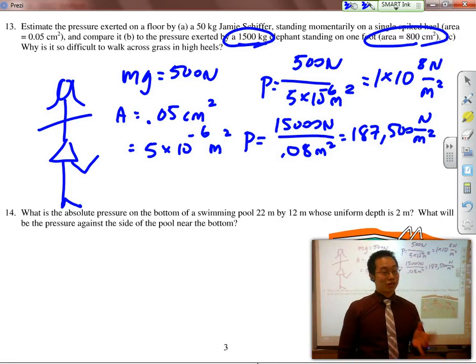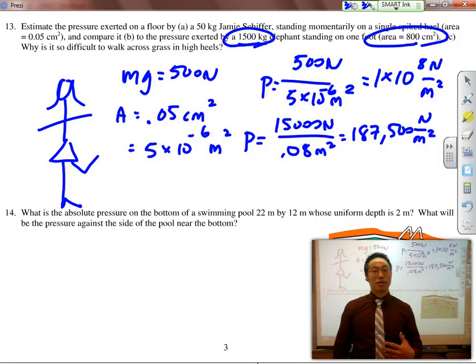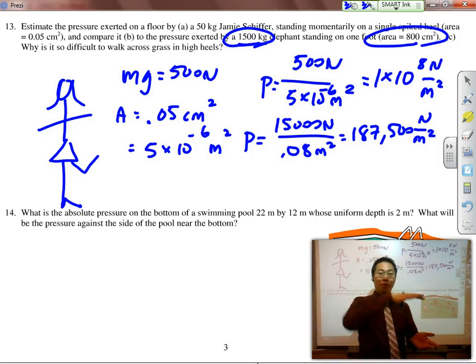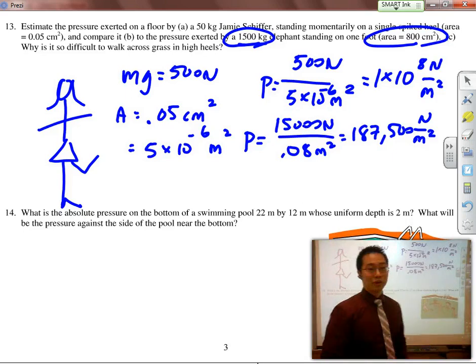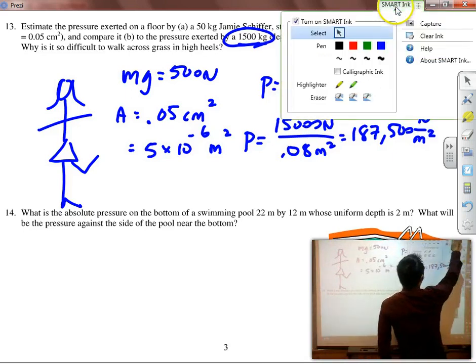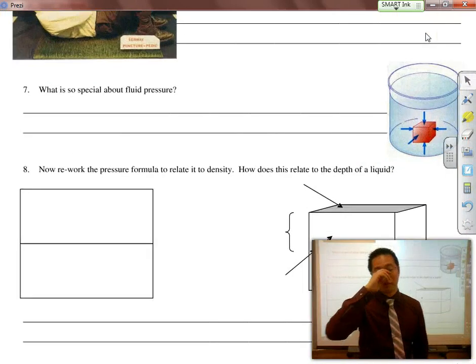If we compare that to an elephant now. If an elephant were to stand on your foot, you might think that might hurt a lot more compared to if Jamie stood on your foot. But if we calculate it out, the pressure exerted by the elephant, who has a mass of 1500, that's a weight of 15,000 newtons, divided by an area of 800 centimeters squared, that's 0.08 meters squared, would equal to 187,500 newtons per meter squared. A large amount, but not nearly as large as Jamie Schiffer. If Jamie Schiffer were to actually stand on a single-heeled foot and stand on your foot, it would be enough pressure to actually penetrate through you.